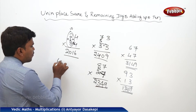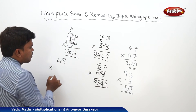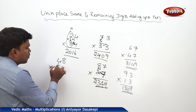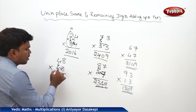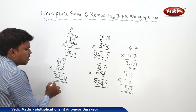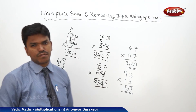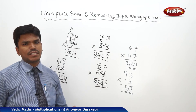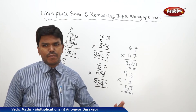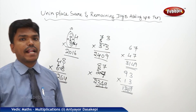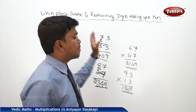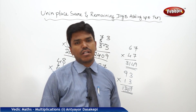Similarly, 48 into 68: 4 into 6 is 24, plus 8 is 32. Write 32. Then 8 into 8 is 64. Answer is 3264. So, like this, we can calculate any double-digit numbers where the units places are the same and the remaining digit places add up to 10. Units place same and the remaining places adding up to 10.